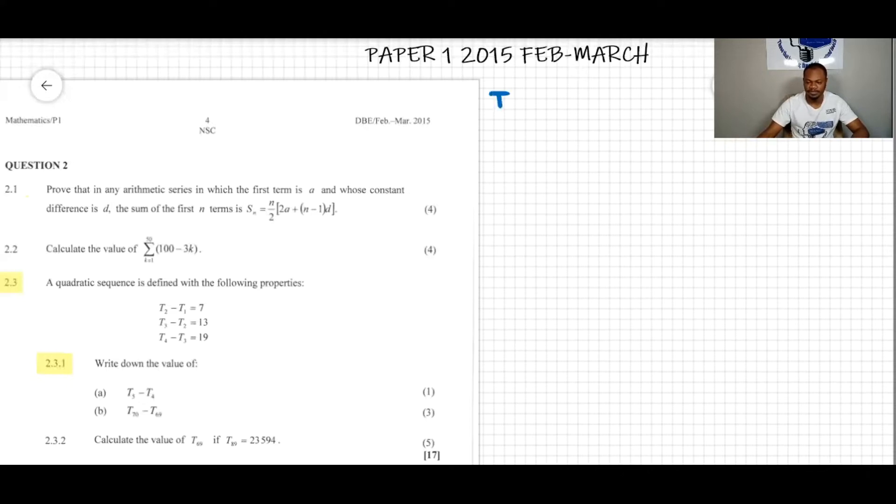We have T2 minus T1 equals 7, then T3 minus T2 is 13, and T4 minus T3 is 19. Now we want to find T5 minus T4. We can notice that if we treat this as a pattern...